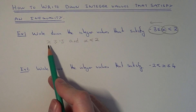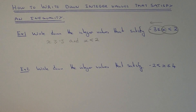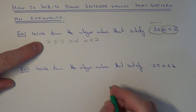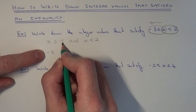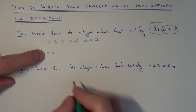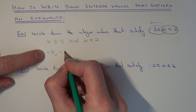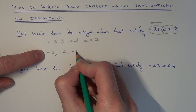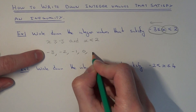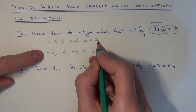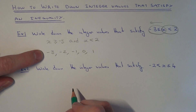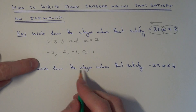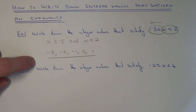So we're looking for the x values which are more than or equal to minus 3, and they also have to be less than 2. We start on minus 3, because x can be equal to minus 3, and then we go all the way up. We don't include 2 because x has to be less than 2, so we stop on the 1. So these are our integer values which satisfy the inequality.